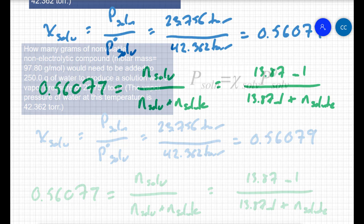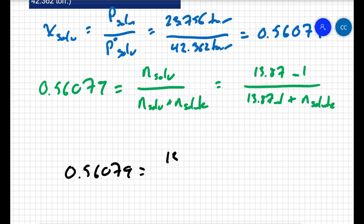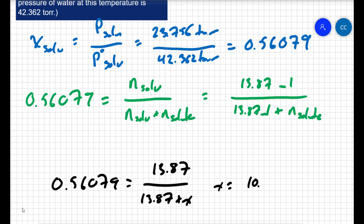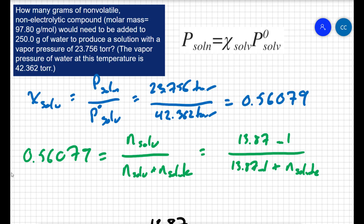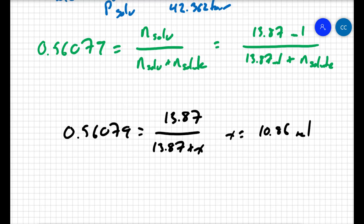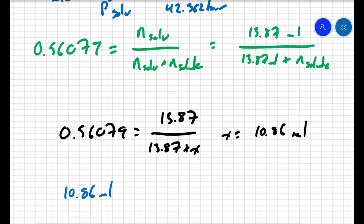So I can just solve now for the moles of my solute. 0.56079 equals 13.87 divided by 13.87 plus x. When you solve for x, you get 10.86 moles. Now the question wasn't asking for how many moles of solute, the question was asking for the mass of solute. But we know that the molar mass is 97.8 grams per mole. So we can take our 10.86 and multiply it by the molar mass. 10.86 moles times 97.8 grams for every one mole.